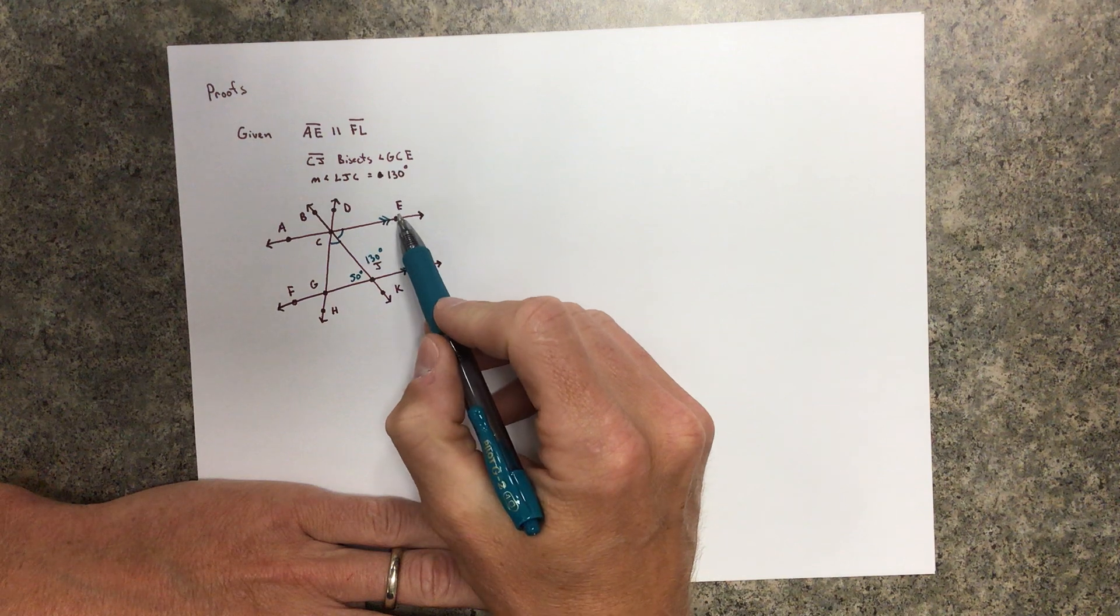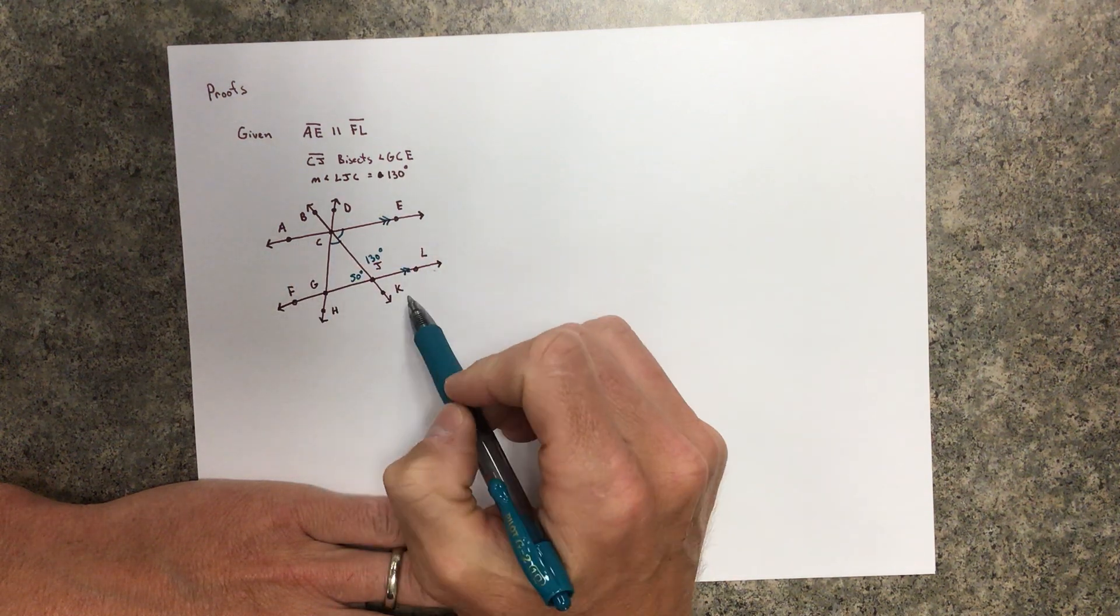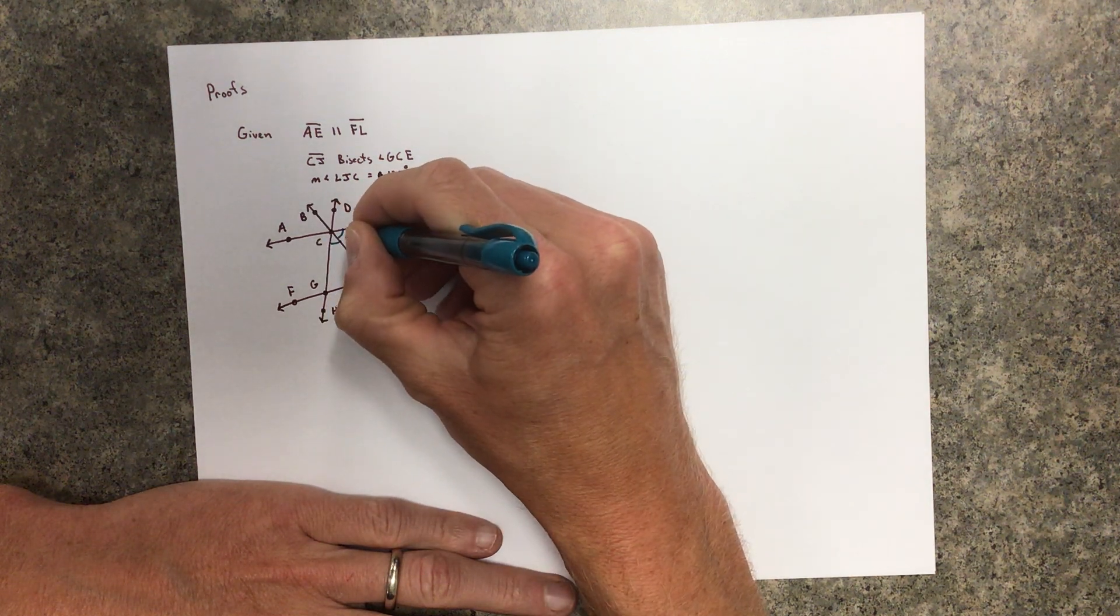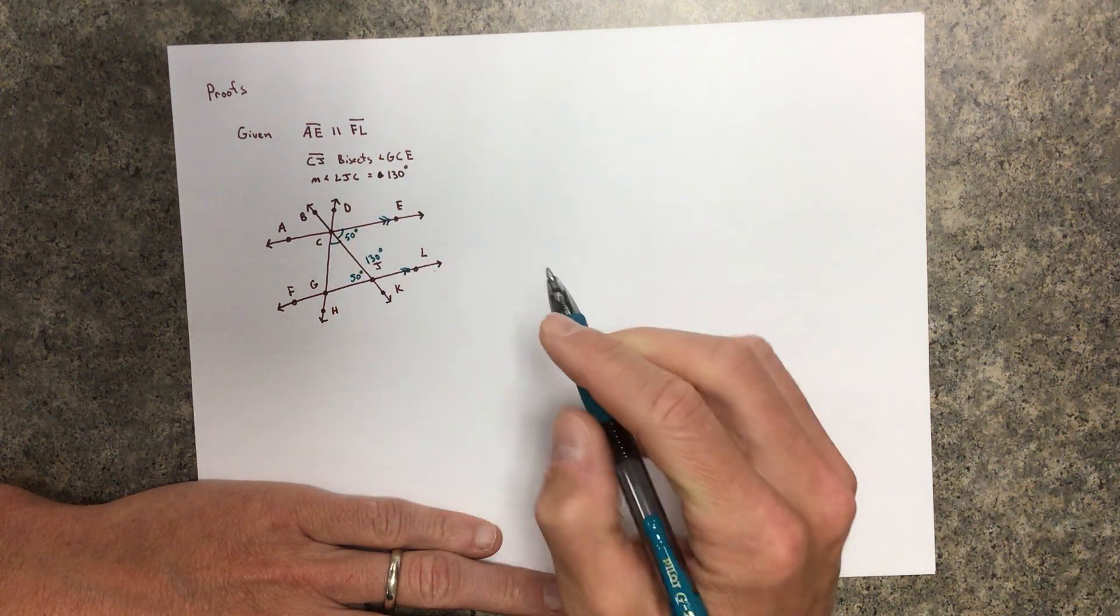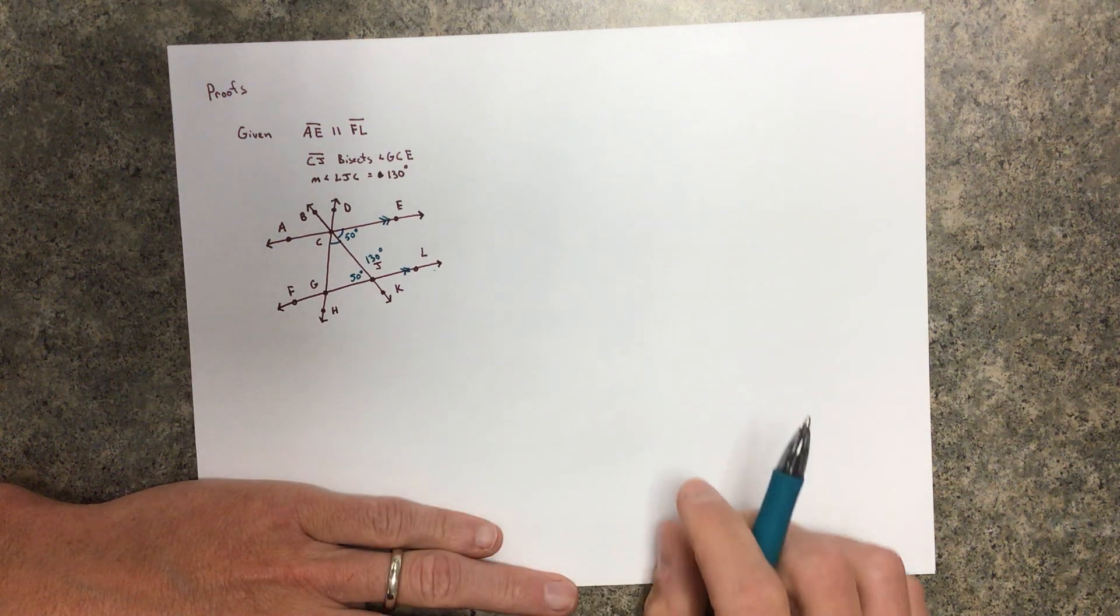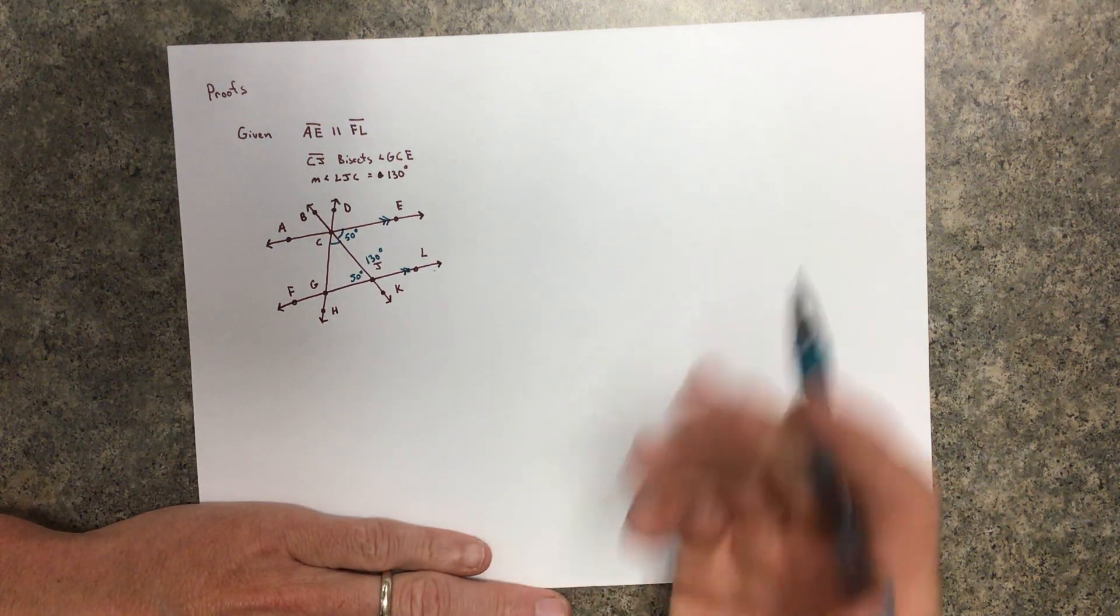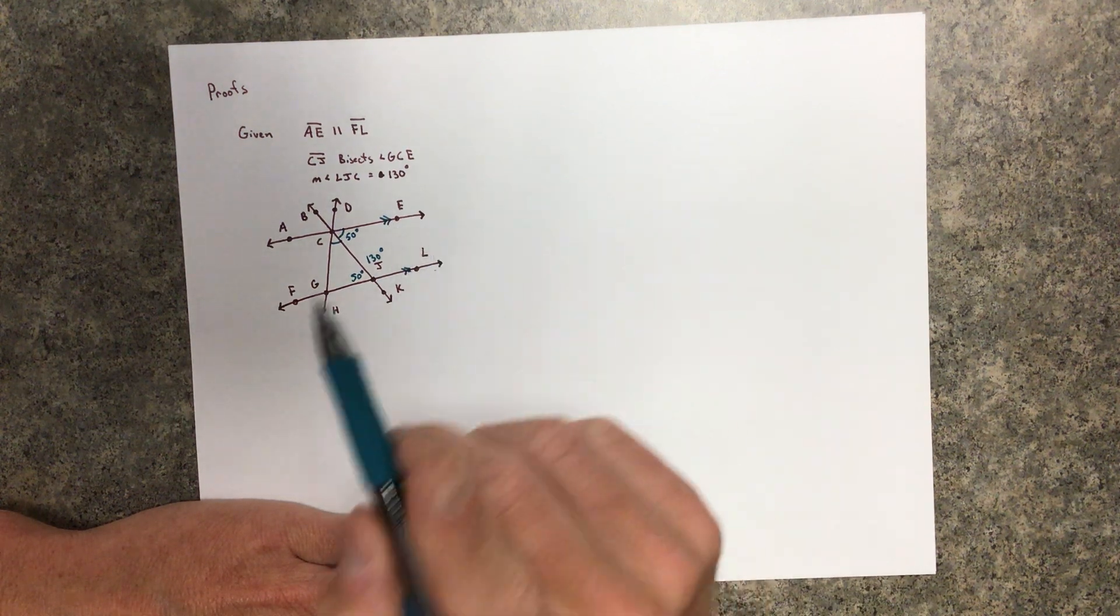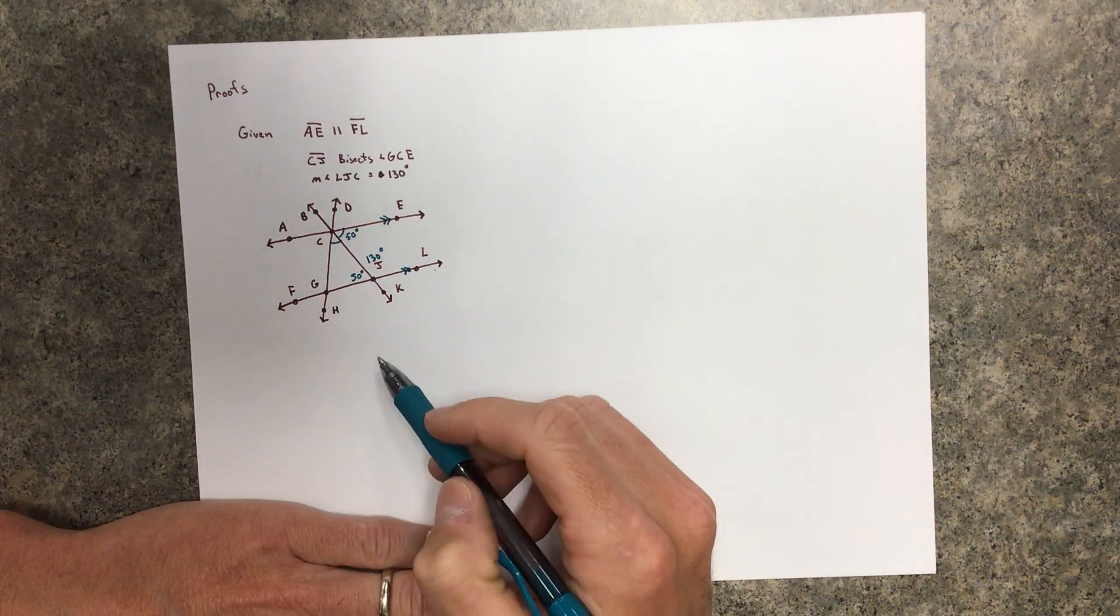If this line and this line are parallel, and this is 50, then this angle has to be 50. Those are alternate interiors, and I know that alternate interiors are congruent as long as the lines are parallel. If parallel, then alternate interiors are congruent.